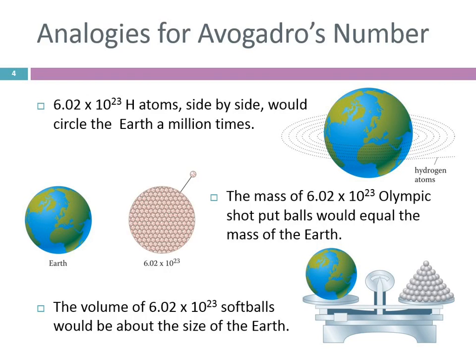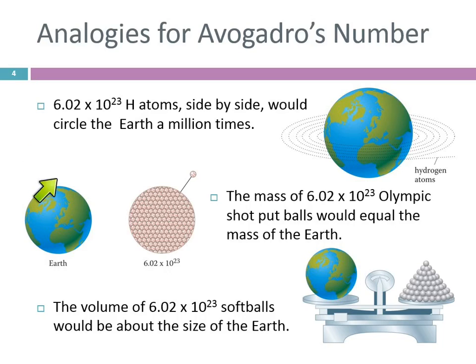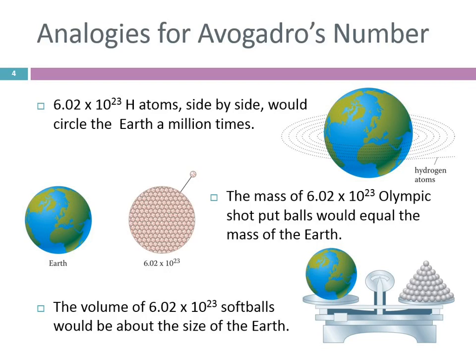How big is Avogadro's number? If you took Avogadro's number of hydrogen atoms, which are really small, and put them side by side, it would circle the Earth a million times. Those aren't even dust particles — hydrogen atoms side by side would circle the Earth a million times. If we had Avogadro's number of Olympic shot put balls, their mass would equal the mass of the Earth.